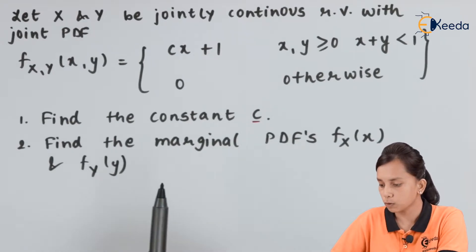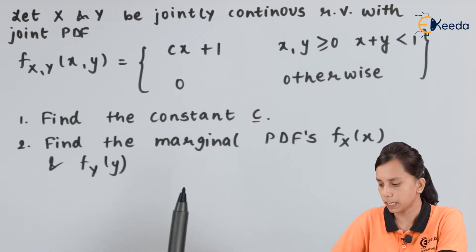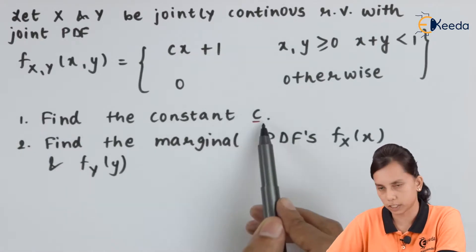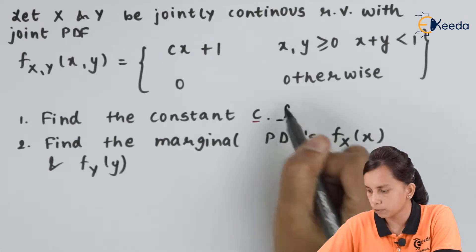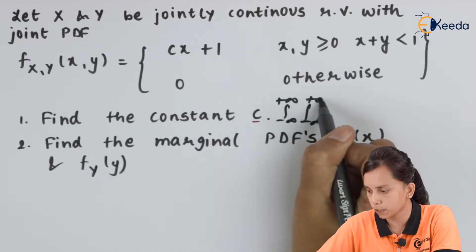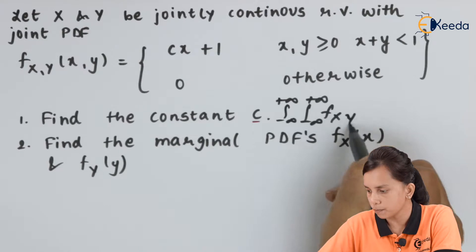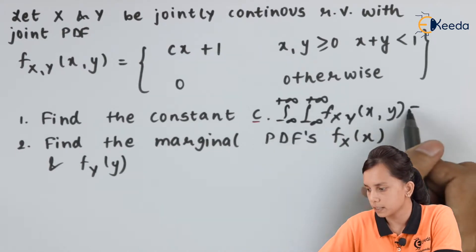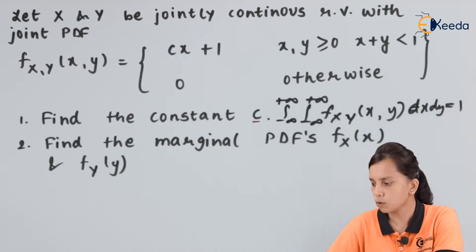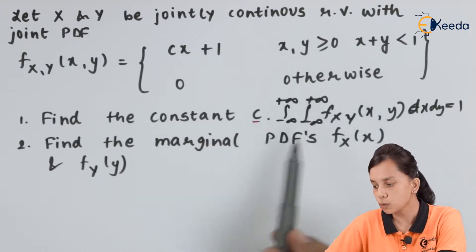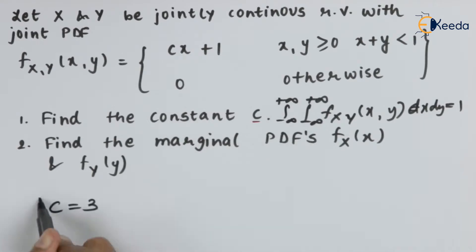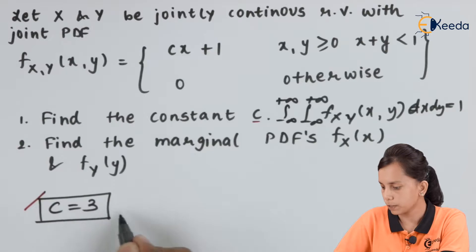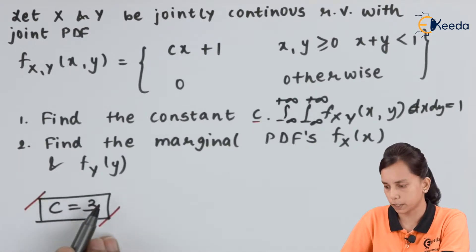I recommend you go through the previous video in which we already calculated the value of constant c, just by using the property that the double integral from minus infinity to plus infinity of f(x,y) dx dy equals 1. Using this property, we calculated c equals 3.